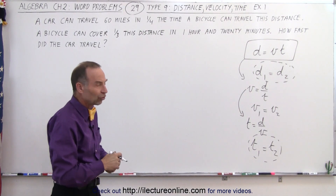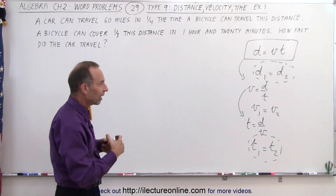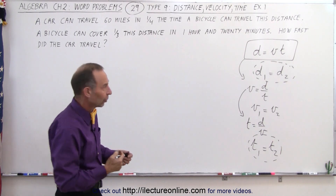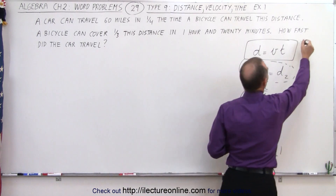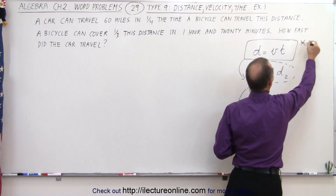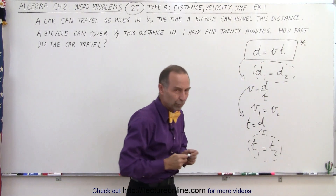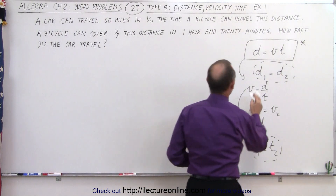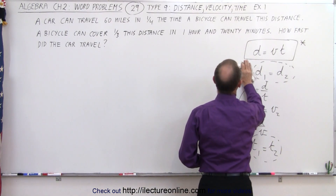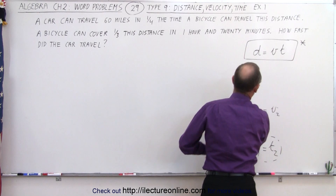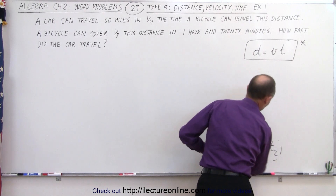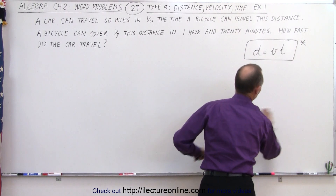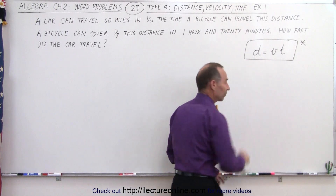There are a lot of different variations, and these approaches don't always work. So it's always good to start with the core concept that distance equals velocity times time. We're going to look at an example where the typical approaches won't work, but this equation is still the key to solving the problem.